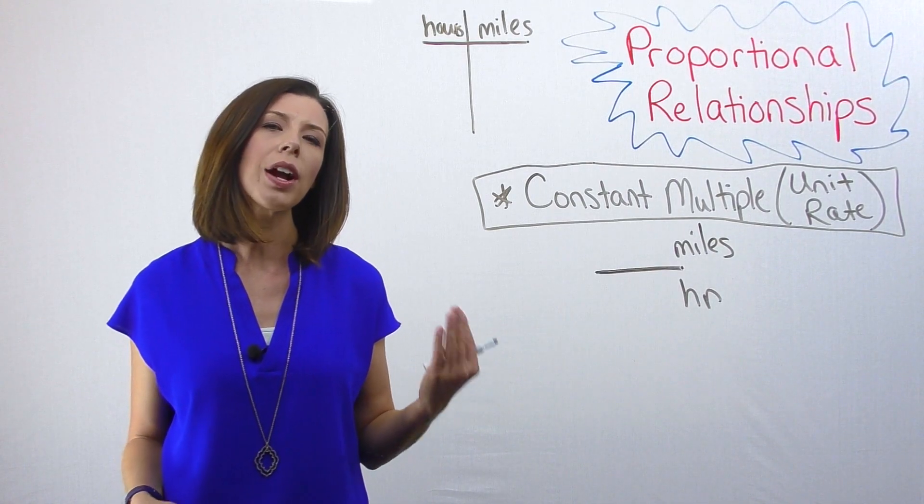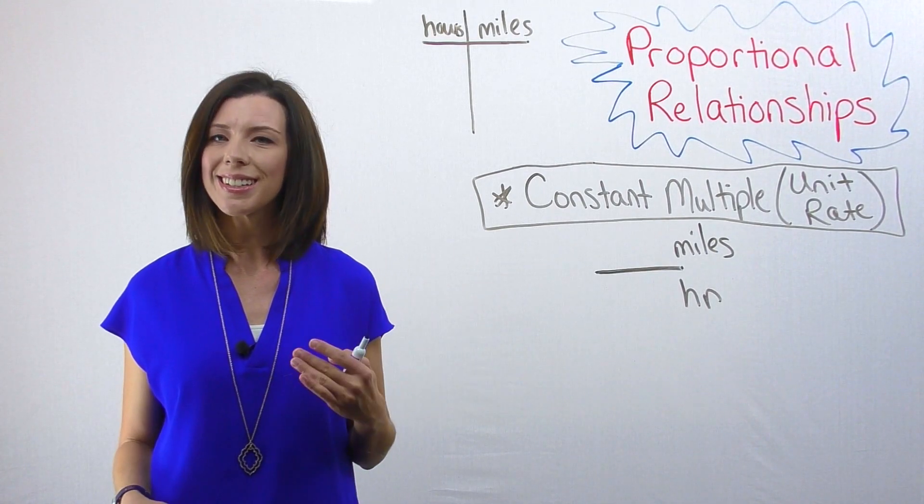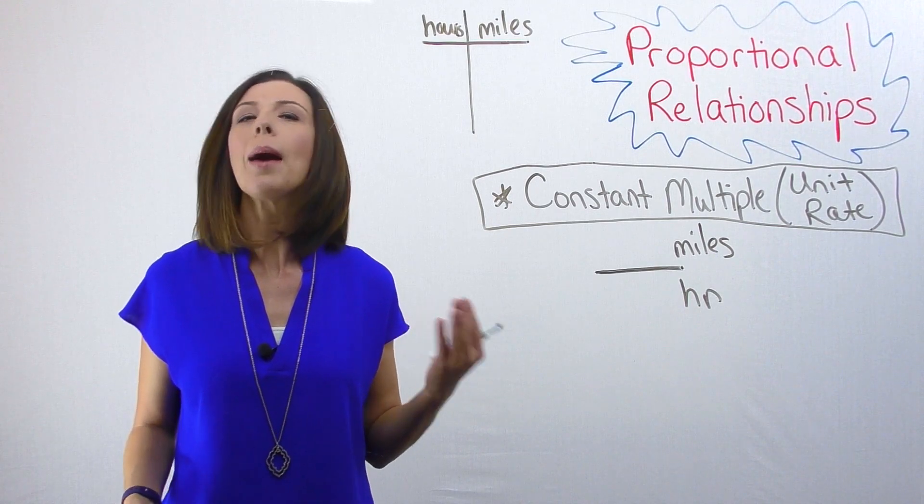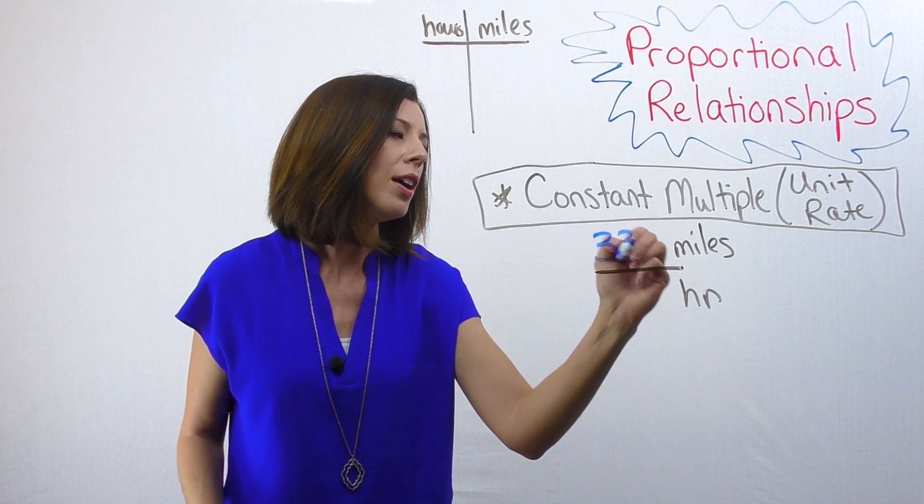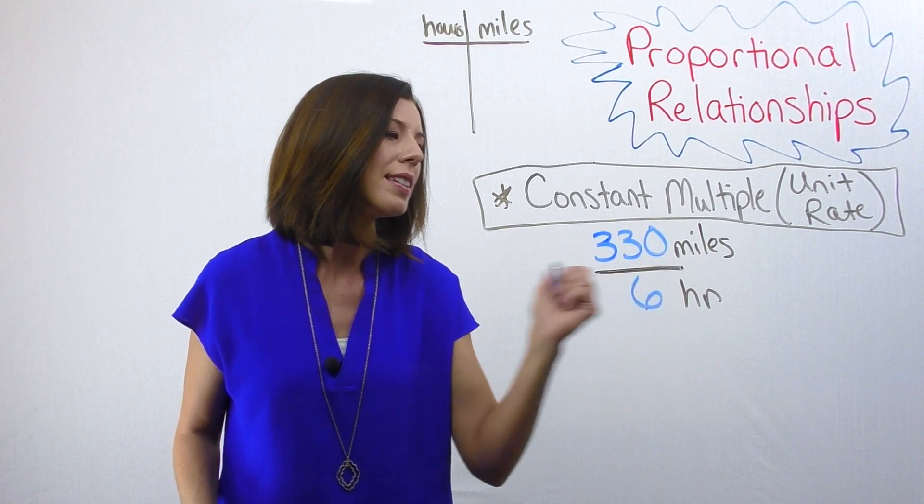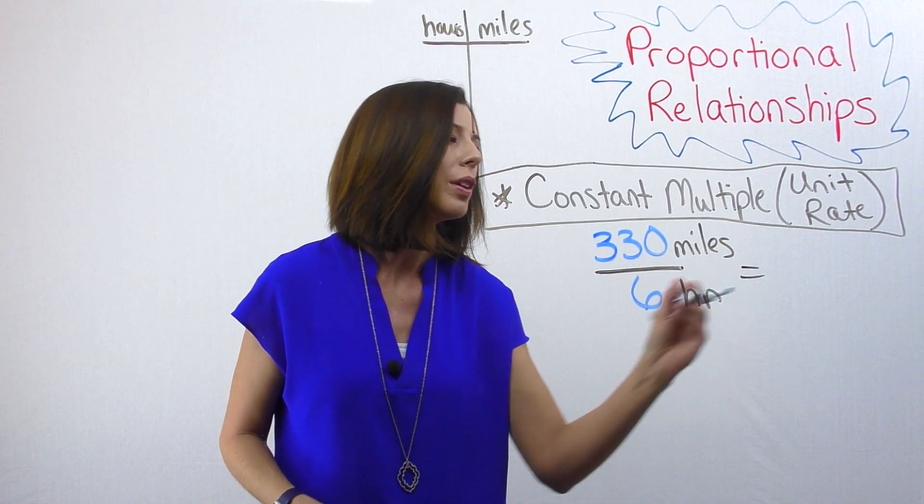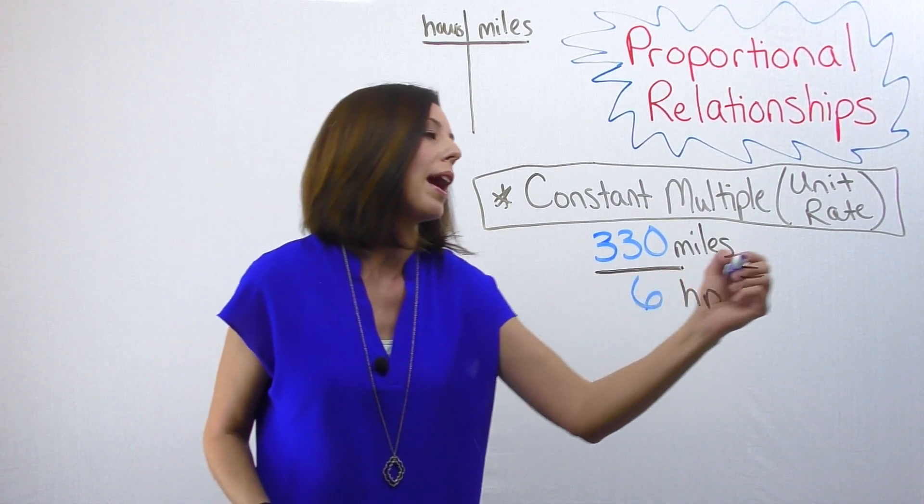okay, so if I know that I can drive 330 miles in six hours, how fast am I going? How many miles per hour? So I can literally say 330 miles in six hours. So then what does that equal in terms of miles per one hour?